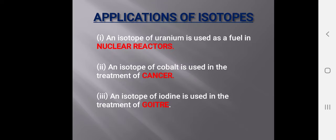Applications of isotopes: An isotope of uranium is used as fuel in nuclear reactors. An isotope of cobalt is used in the treatment of cancer. An isotope of iodine is used in the treatment of goiter, which is caused by the deficiency of iodine. These are some of the applications of isotopes.